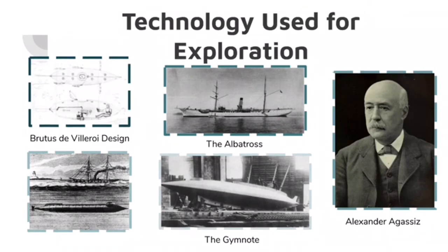In 1899, Swiss zoologist Alexander Agassiz made several journeys on the Albatross to study different types of coral reefs and fish populations in the Pacific Ocean. Over the next six years, an abundance of marine life was explored in areas that before then were completely unexplored.